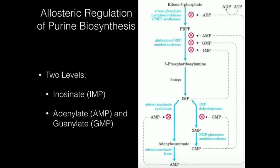Let's first talk about the first part of regulation — the first level, which is before the level of IMP. We're talking about the regulation of PRPP synthetase and glutamine PRPP amidotransferase. For PRPP synthetase, there's one main regulatory molecule, and that's adenosine diphosphate, or ADP. High levels of ADP will inhibit PRPP synthetase. Because if we have high levels of ADP, that's going to indicate that the cell is in low energy charge. If we had high ATP, the triphosphates would indicate high energy level.